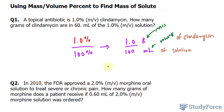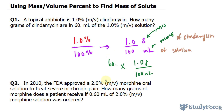We'll take 60 — notice there's a decimal right after the zero, which means both digits are significant — and multiply it by the mass per volume ratio we created: 1.0 grams of clindamycin over 100 milliliters of solution. The milliliter units cancel out, leaving us with the grams, or the mass, of clindamycin.